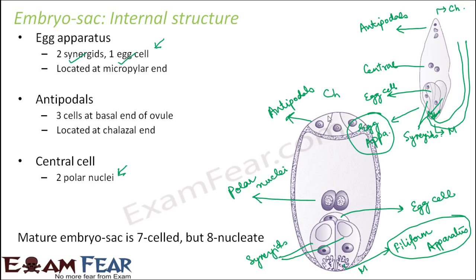The overall result is that a mature embryo sac is seven-celled but eight-nucleate. It is seven-celled because the two polar nuclei join together to form a single cell. So we have three antipodal cells, three egg apparatus cells, and one central cell — six plus one equals seven. It is seven-celled but eight-nucleate because eight nuclei are present in total.